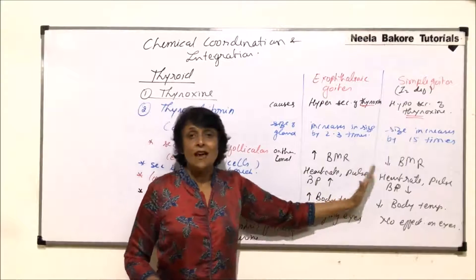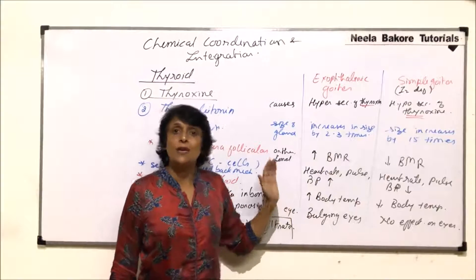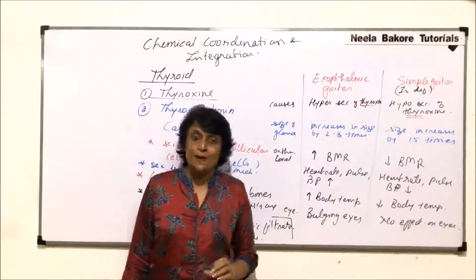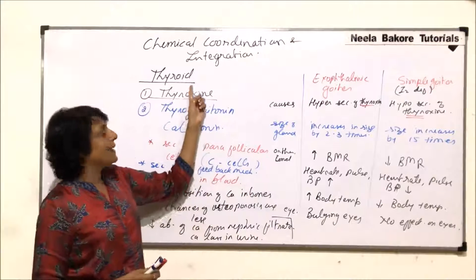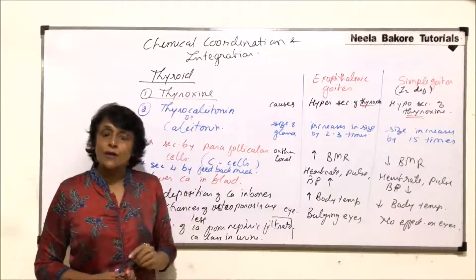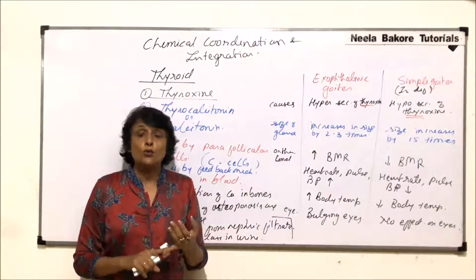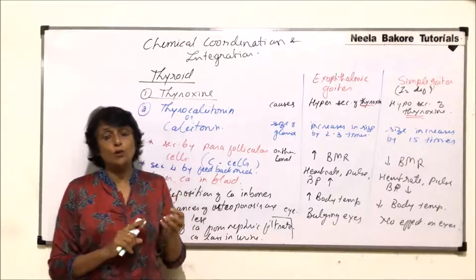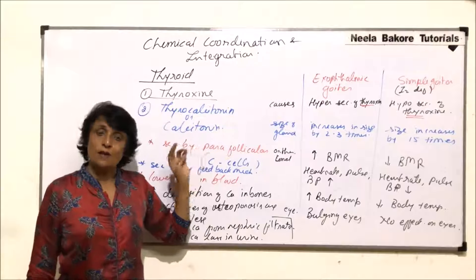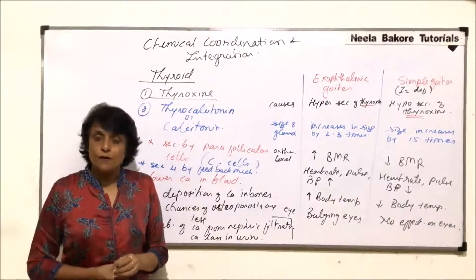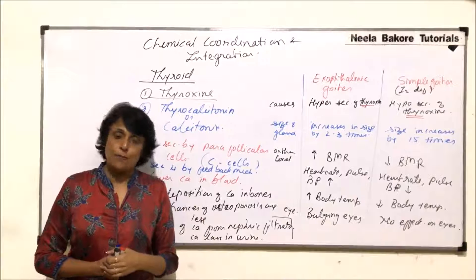So we have compared the two types of goiters — exophthalmic and simple (iodine deficiency) goiter. With this, we have completed the thyroid gland, covering its structure and both its hormones: thyroxine and calcitonin, along with their functions and what happens in hyper and hypo conditions.